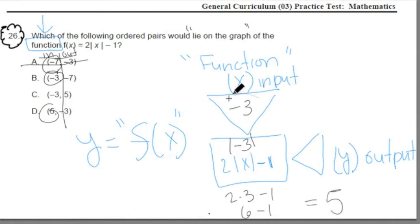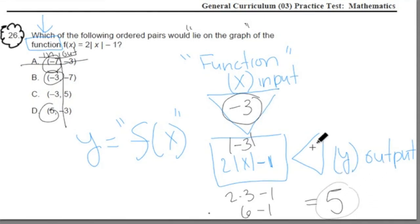So when we input a -3 into our function, out comes a 5. Does that work for B? B says when you input a -3, you get a -7. That doesn't work. Cross it out. But C says when we input -3, we get a 5, positive 5. C is the correct answer, team.